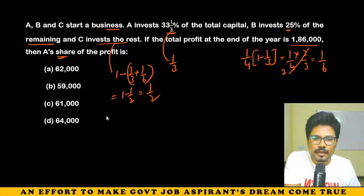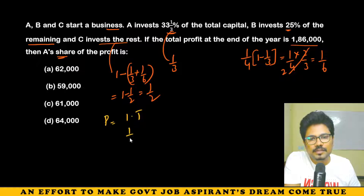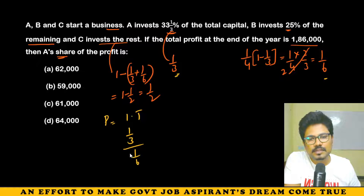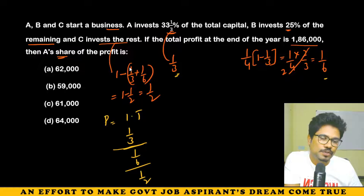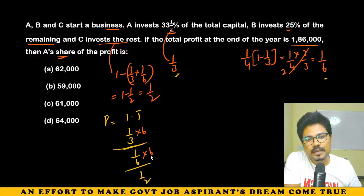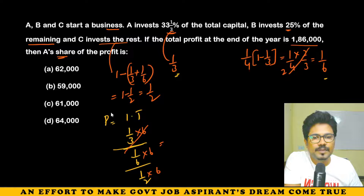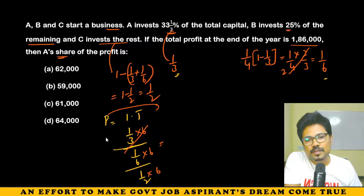Profit ratio equals I × T. Since all invest for the same 12 months, time cancels out. The profit ratio is simply 1/3 : 1/6 : 1/2. Multiply through by the LCM of 3, 6, and 2, which is 6. This gives profit ratio 2 : 1 : 3.